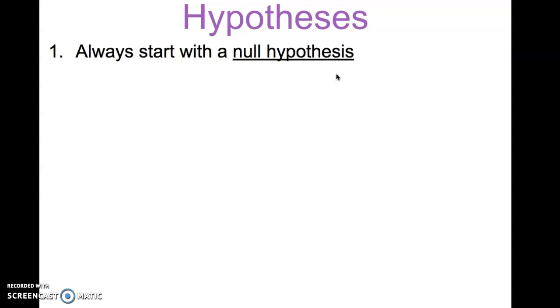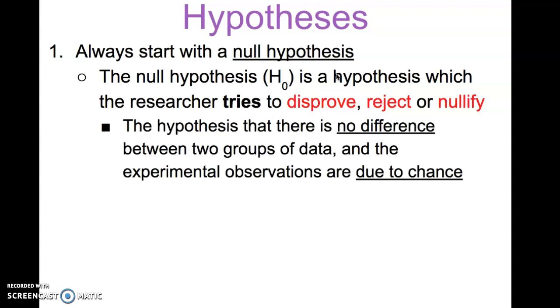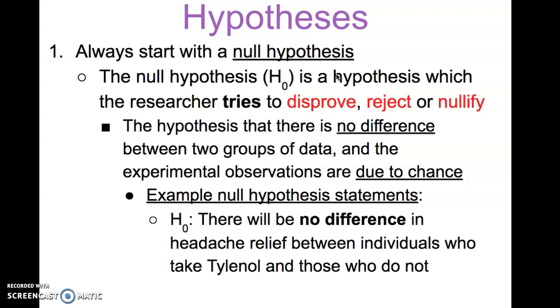Hypotheses can be written two ways. When we write a hypothesis, we always want to start with writing a null hypothesis. The null hypothesis, H₀, is a hypothesis which researchers try to disprove, reject, or nullify. The hypothesis means that there is no difference between the two groups of data, and the experimental observations are due to chance. An example null hypothesis would be: H₀, there will be no difference in headache relief between individuals who take Tylenol and those who do not. Or, basically, what you're saying is Tylenol will have no effect on headache relief.